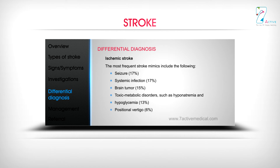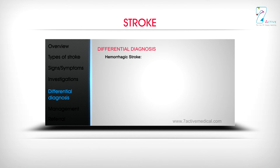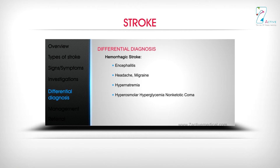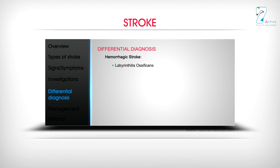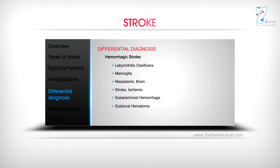Differential diagnosis for hemorrhagic stroke includes encephalitis, headache, migraine, hypernatremia, hyperosmolar hyperglycemic non-ketotic coma, hypertensive emergencies, hypoglycemia, hyponatremia, labyrinthitis, meningitis, neoplasms, subarachnoid hemorrhage, subdural hematoma, and transient ischemic attack (TIA).